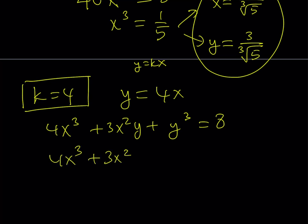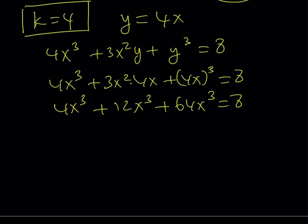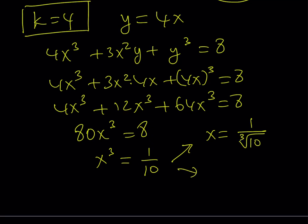This gives me 3x² times 4x. And then I'm supposed to write 4x quantity cubed is equal to 8. This becomes 4x³ plus 12x³ plus 64x³ equals 8. And 4 plus 12 is 16. 16 plus 64 is 80. We get 80x³ equals 8. And x³ becomes 1/10. From here, x becomes the cube root of 1 over 10 or 1 over cube root of 10. And since y is equal to 4x, I can write it as 4 over cube root of 10. And this gives me another ordered pair.